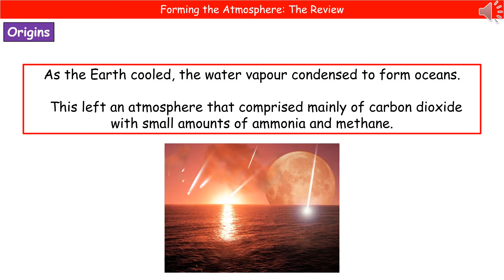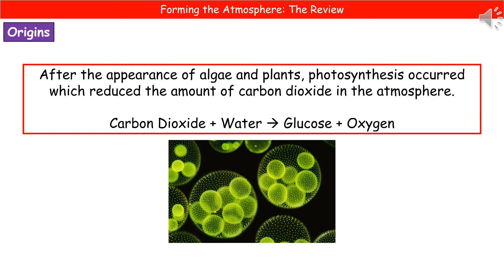There were also small amounts of ammonia and methane around. As time continued to pass, eventually we had algae and plants appear, and their appearance is key to the change that we see in our atmosphere that allows life like us to exist. The algae and the plants carried out photosynthesis, which then reduced the amount of carbon dioxide in the atmosphere.